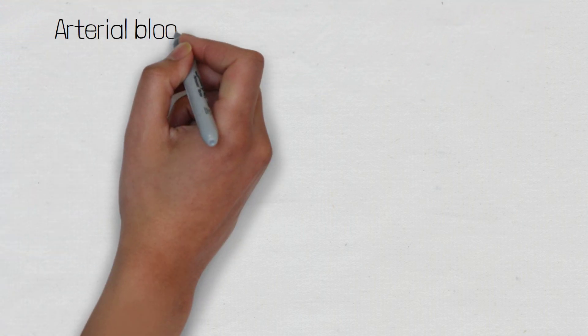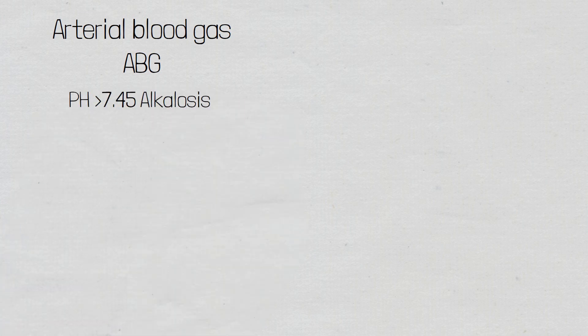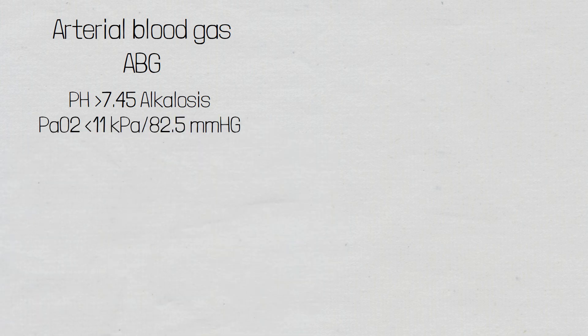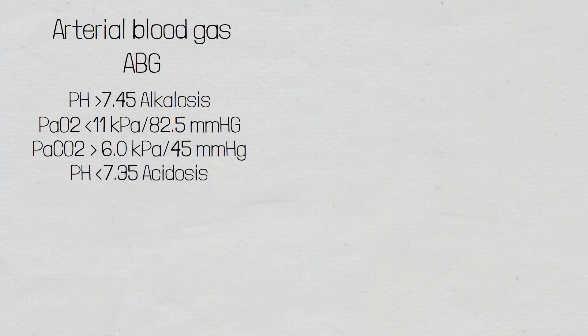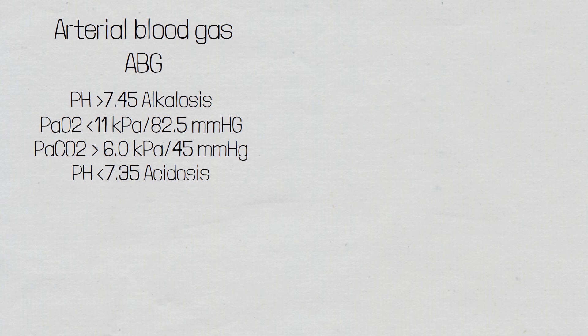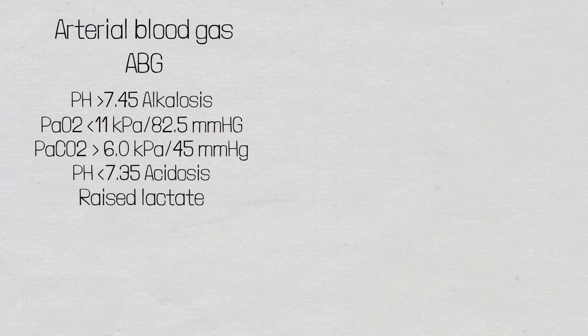Another investigation that can be conducted is an arterial blood gas. Patients suffering from an acute pulmonary embolism often have a respiratory alkalosis because of the high respiratory rate, which removes excess amounts of CO2 from the body. However, as the patient deteriorates and can no longer compensate, this may reverse — an arterial blood gas may show low oxygen levels, high carbon dioxide levels, and the pH may decrease showing a respiratory acidosis. There may also be a raised lactate as cells go into anaerobic metabolism.